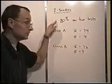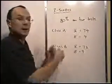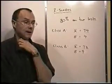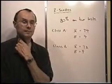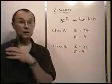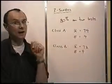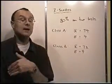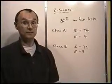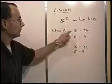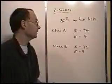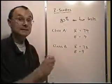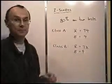They scored the same percentage in both classes. But imagine in one class the average was 90% — getting 80% would be really low, near the bottom. In the other class, if the average was 70%, then 80% is an outstanding achievement. How do you know? That's where Z-scores come in. Z-scores are a way of comparing when you have means and deviations and you wonder where a result fits in.